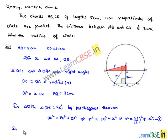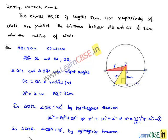Also consider triangle OAQ where angle OQA equals 90 degrees. Applying Pythagoras theorem: OA² = AQ² + OQ², which gives r² = (AB/2)² + (OP + PQ)², that is r² = (5/2)² + (x + 3)². Let this be equation number 2.